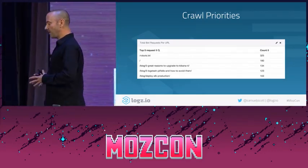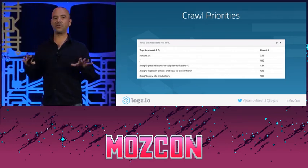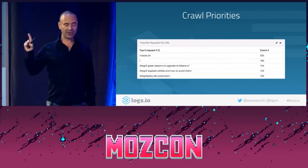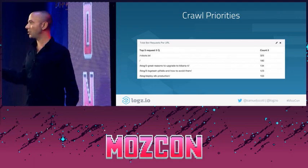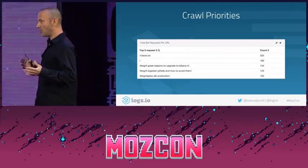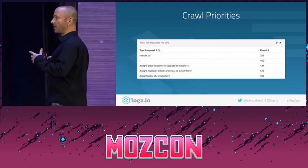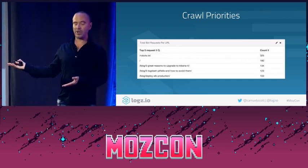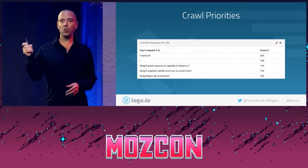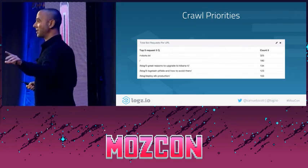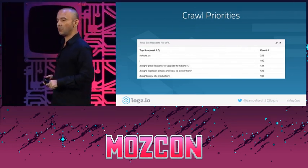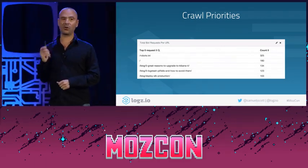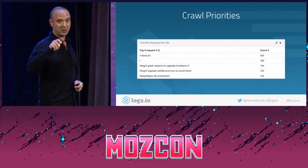Crawl priorities. When you group your URLs and directories together, you can see what parts of your website are getting crawled the most and least by search engines. The question to ask yourself is: does that match your business priorities? Say you're an e-commerce website — you update the shoes section every single day, but you update the furniture section once a month. You want Google to crawl the shoes directory a lot more often than the furniture directory. So what you can do is set the priorities in your XML sitemaps to reflect those business priorities.